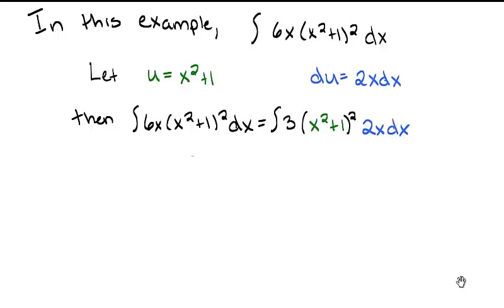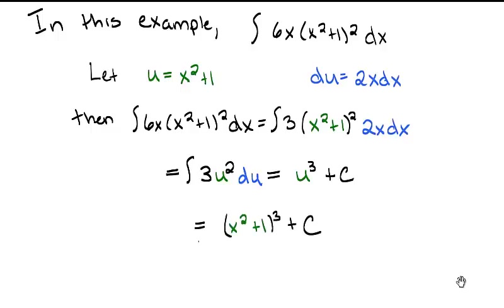Now, replacing x² + 1 with u and 2x dx with du, we get that this is equal to the integral of 3u² du, which is equal to u³ + c. Now, subbing back in for u, we get that the integral we wanted is equal to (x² + 1)³ + c.